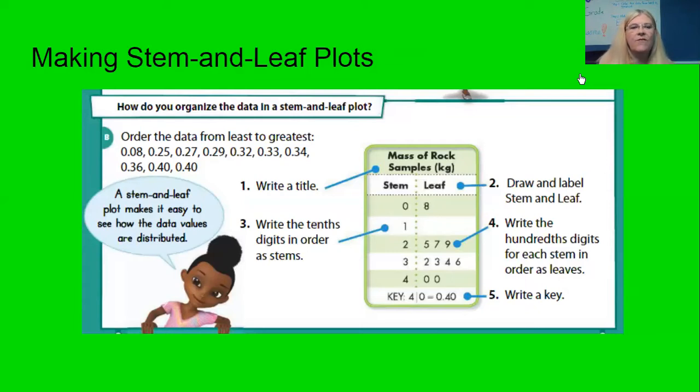In order to do that the very first thing you need to do though is to take your data and put it in a list from the least to the greatest. Then you can easily look at it and decide how you're going to put it in your stem and leaf plot chart.